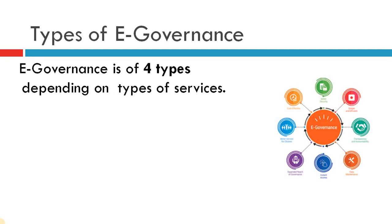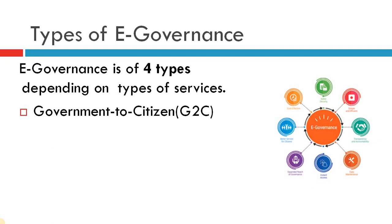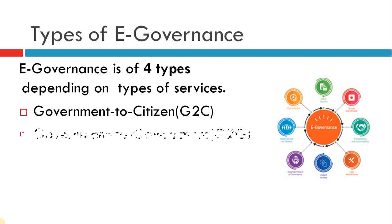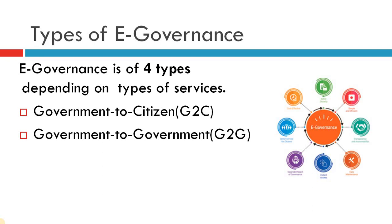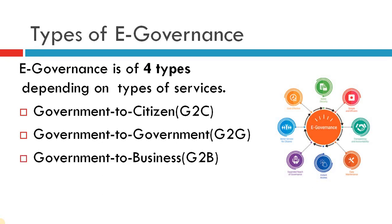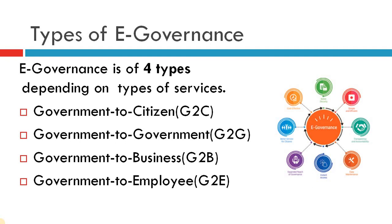E-governance is divided into four types depending on the types of services. The first one is Government to Citizens (G2C). Next one is Government to Government (G2G). Next one is Government to Business (G2B). And the last one is Government to Employee (G2E). These are the four different types depending on the services.